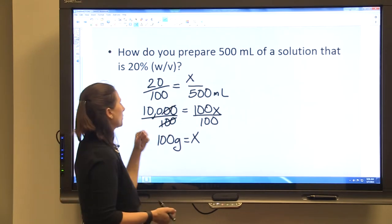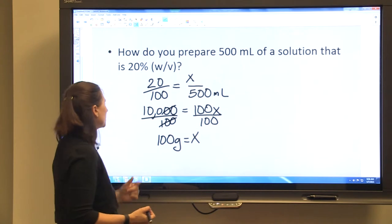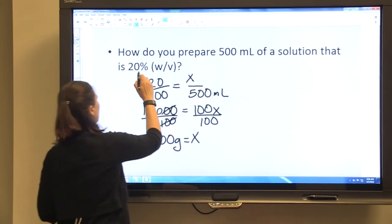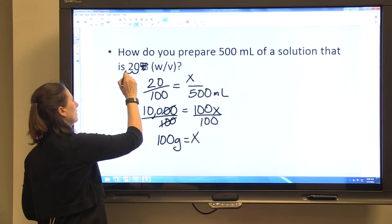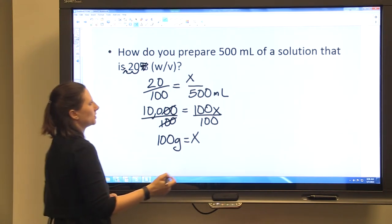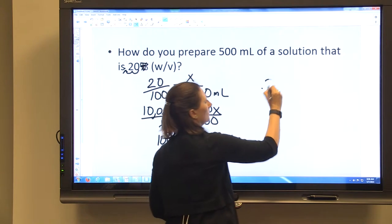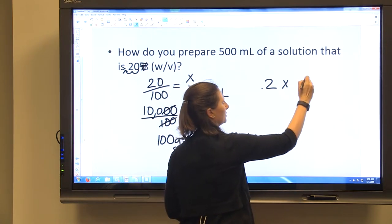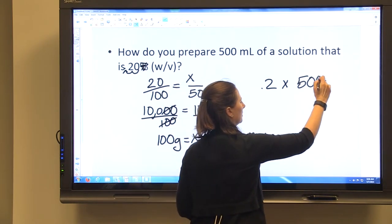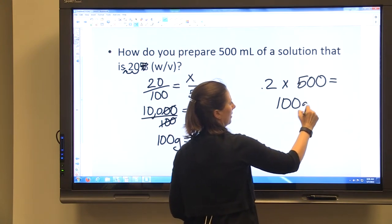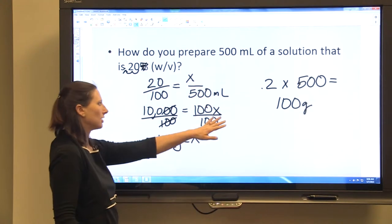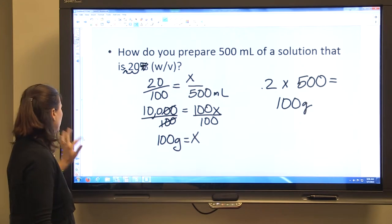Alternatively, if it makes more sense for you to use a decimal, we know that 20% if we get rid of our percentage sign and move the decimal is 0.2. So 0.2 times 500 is equal to 100 grams. So either way you can figure out that you need to add 100 grams.